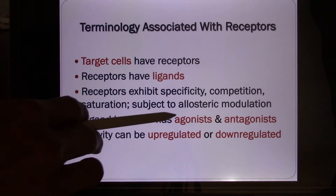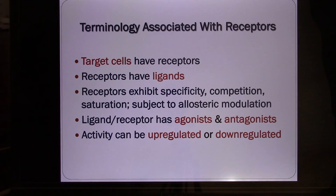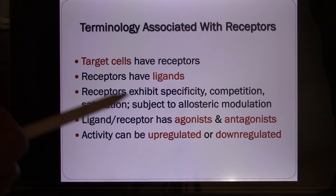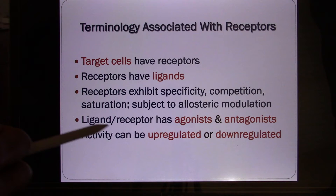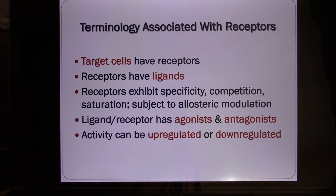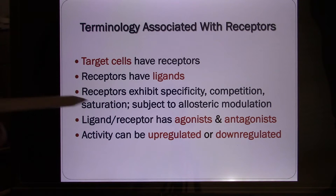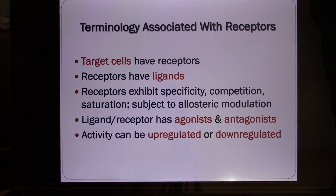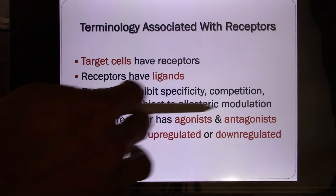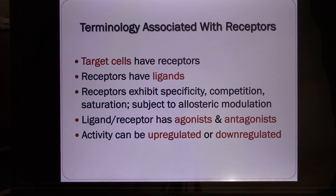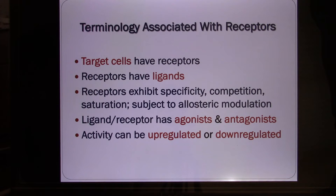Ligands have agonists and antagonists — these two words come from pharmacology. An agonist is a ligand or chemical molecule, possibly a synthesized drug, that can bind with the receptor and trigger the response. An antagonist is a chemical molecule that binds with the receptor but instead of triggering the response, it blocks the response. In this class, we will talk about the beta agonist when we talk about the cardiovascular system — it mimics the sympathetic response.